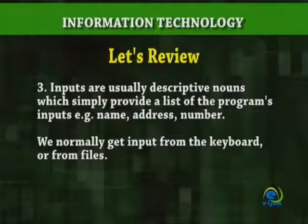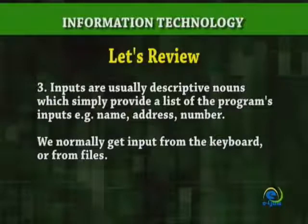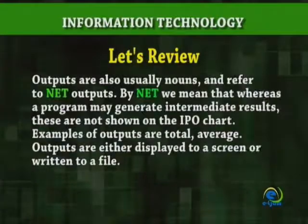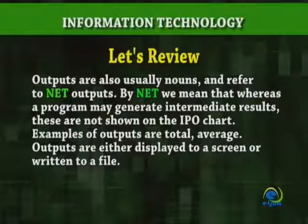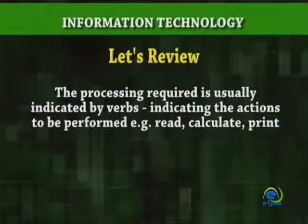Inputs are usually descriptive nouns which simply provide a list of the program's inputs — for example, name, address, number. We normally get input from the keyboard or from files. Outputs are also usually nouns and refer to net outputs. By net we mean that, whereas a program may generate intermediate results, these are not shown on the IPO chart. Examples of outputs are total and average. Outputs are either displayed to a screen or written to a file. Processing required is usually indicated by verbs, indicating the actions to be performed — for example, read, calculate, print.